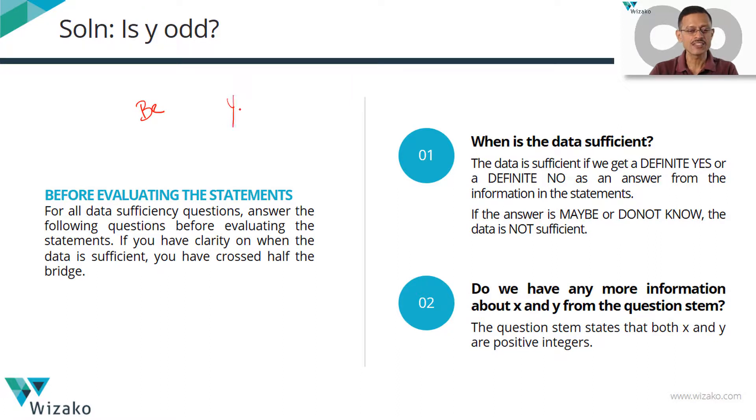for any data sufficiency question, the answer should be a yes or a no. It should be a definite yes or a definite no. If you're able to say from the information in the statement or statements that y is definitely odd, then the data is sufficient. We'll answer it with a yes.